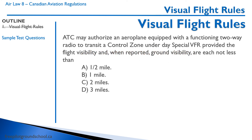ATC may authorize an airplane equipped with functioning two-way radio to transit a control zone under special VFR, provided the flight visibility and reported ground visibility are each not less than — remember, special VFR is control zone only and has the lowest weather minimum. For aeroplanes, the answer is one mile.